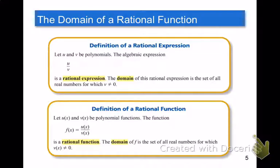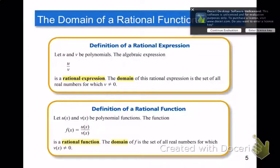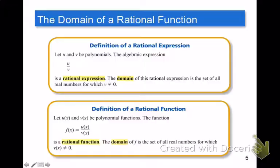The definition holds true when you turn that expression into a function. What happens if u and v are expressions and they're turned into functions of f(x)? Then we still have a rational function. And the domain of that rational function is the set of all numbers for which that bottom polynomial, the denominator, is equal to zero. Make sure you hit that pause button if you need to get those definitions in your notes.